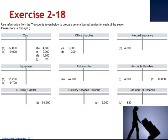Letter G is a debit to gas and oil expense for $820 and a credit to cash. The company paid $820 in cash for gas and oil.